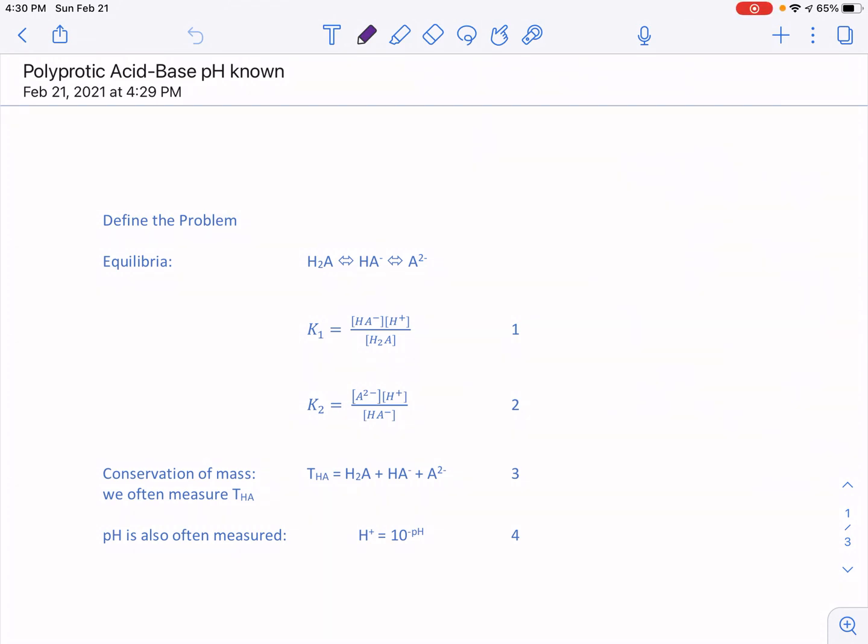Good afternoon. In the past, we've used pH as a master variable to understand the chemical speciation of monoprotic acids. Today we're going to expand that treatment to include polyprotic acids or acids that release more than one proton.